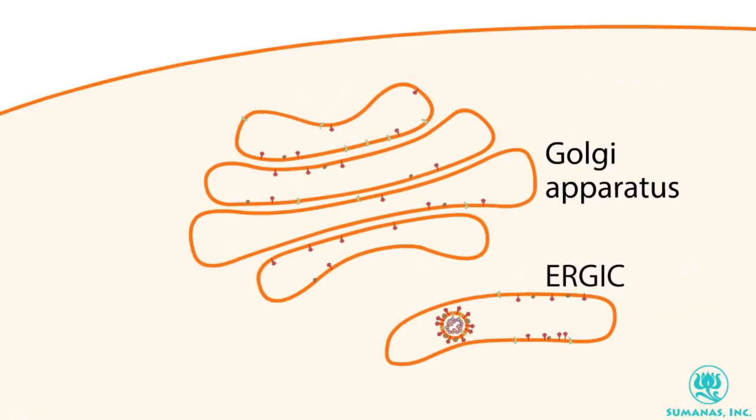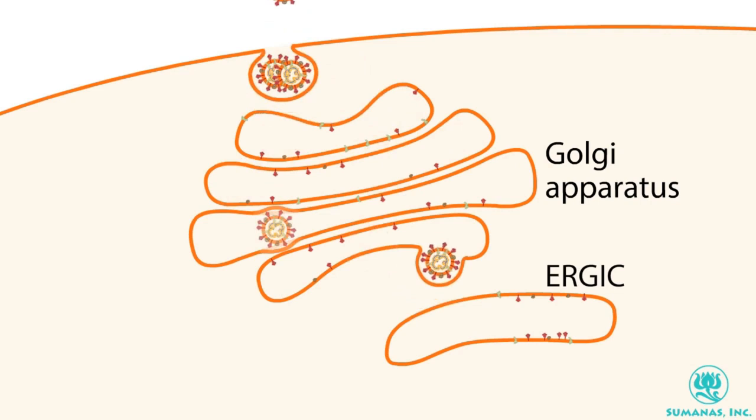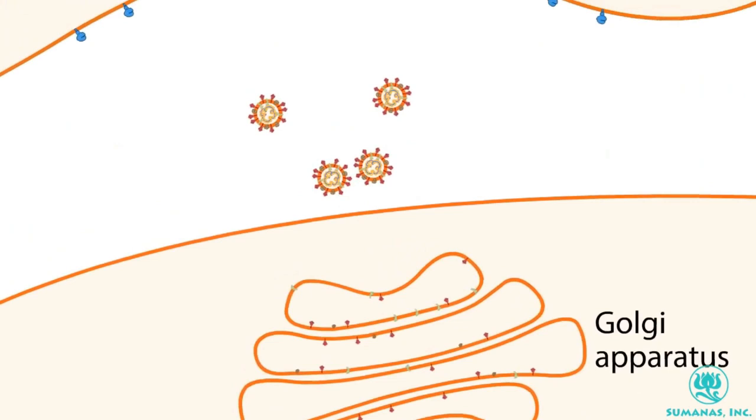The nucleocapsid protein then surrounds newly synthesized RNA-positive strands forming the nucleocapsid. The release of new virions starts with viral structures and nucleic acids subsequently assembling in the ER to Golgi intermediate compartment, or ERGIC. These new virions are packaged into Golgi vesicles, fused with the plasma membrane, and are released from the infected cell by exocytosis to further infect other cells.